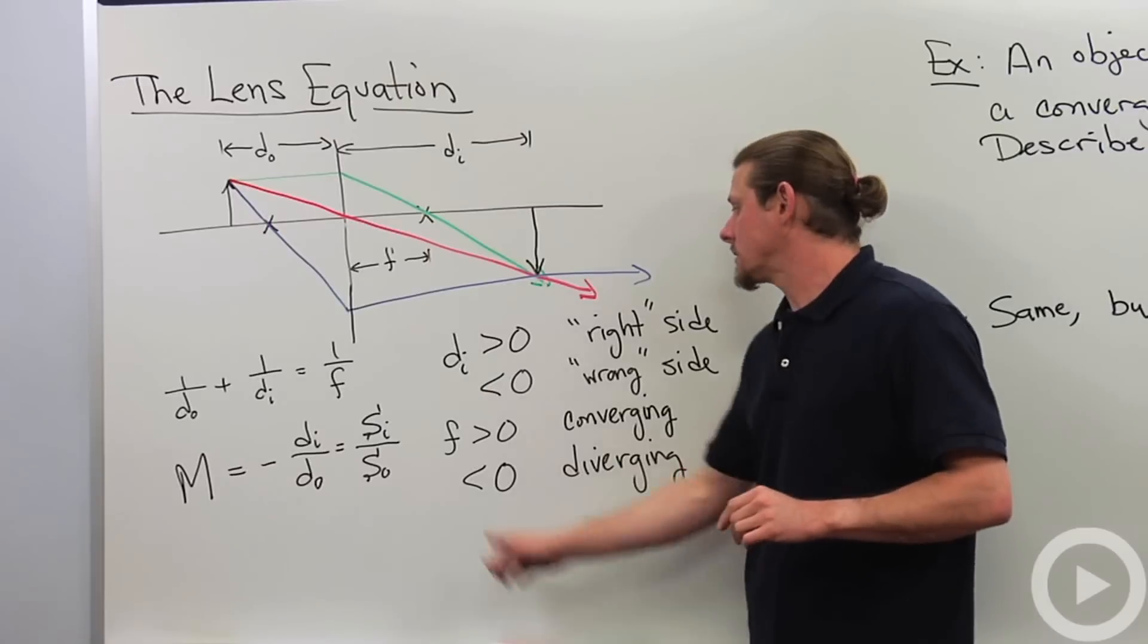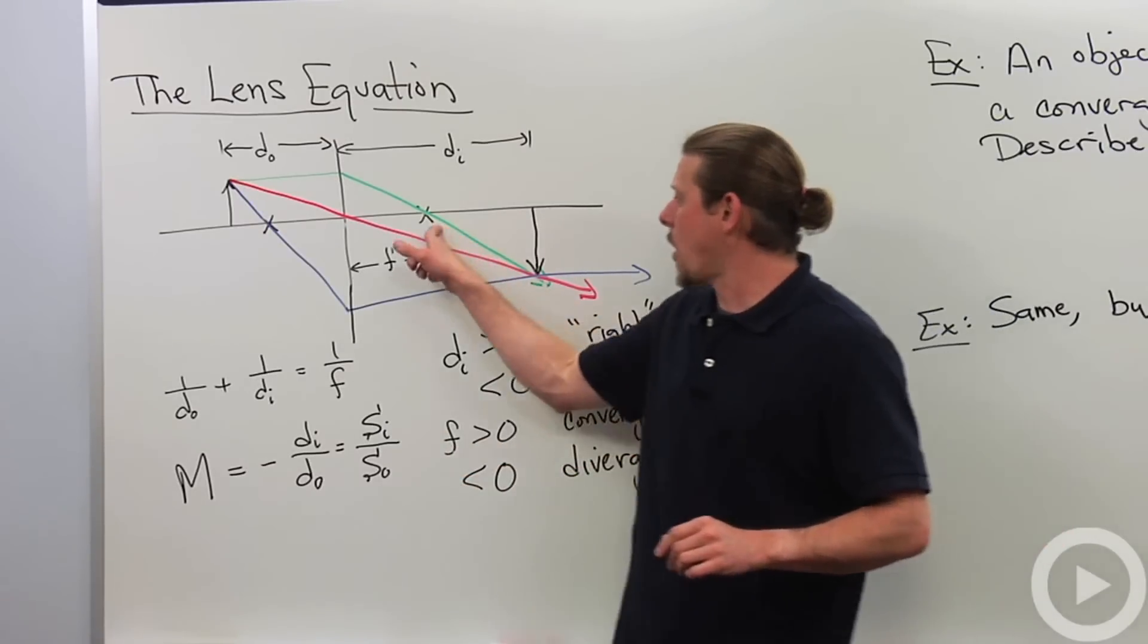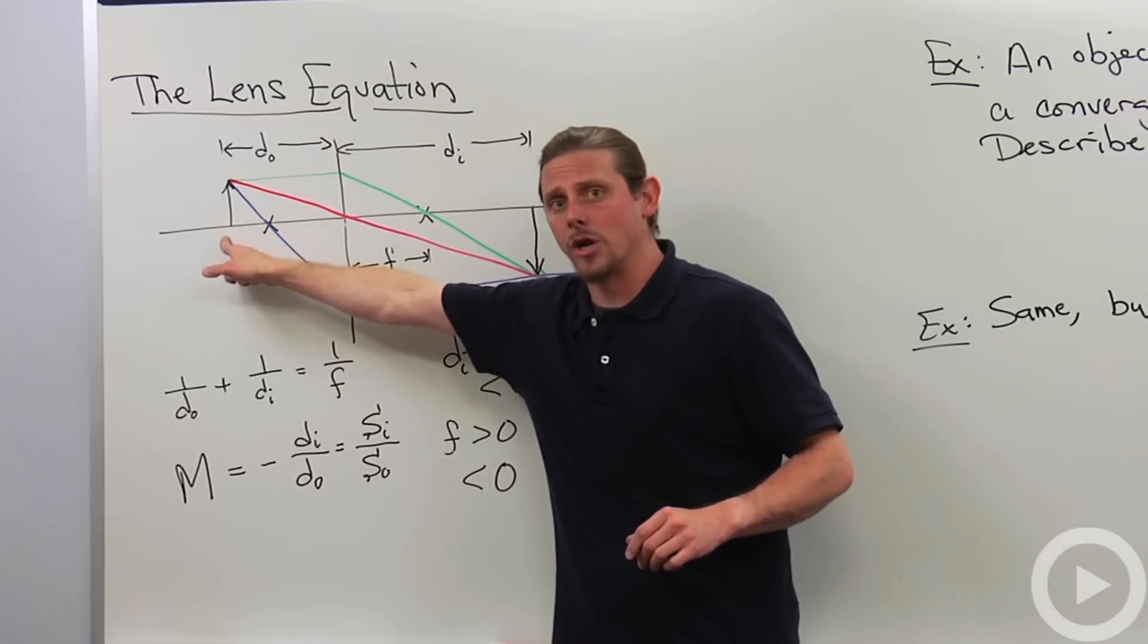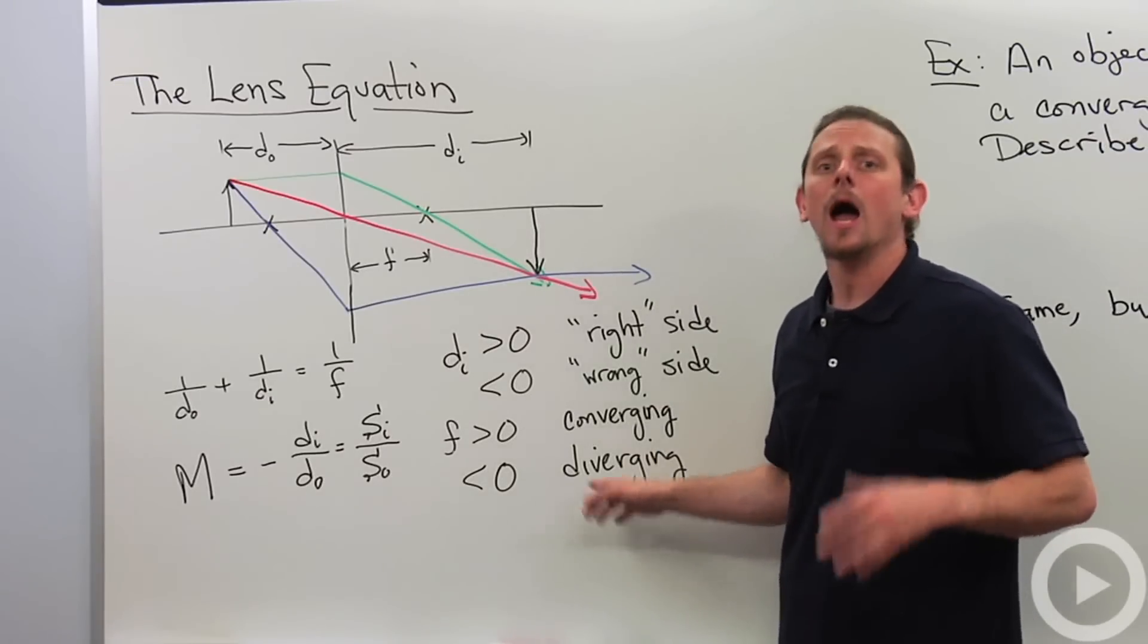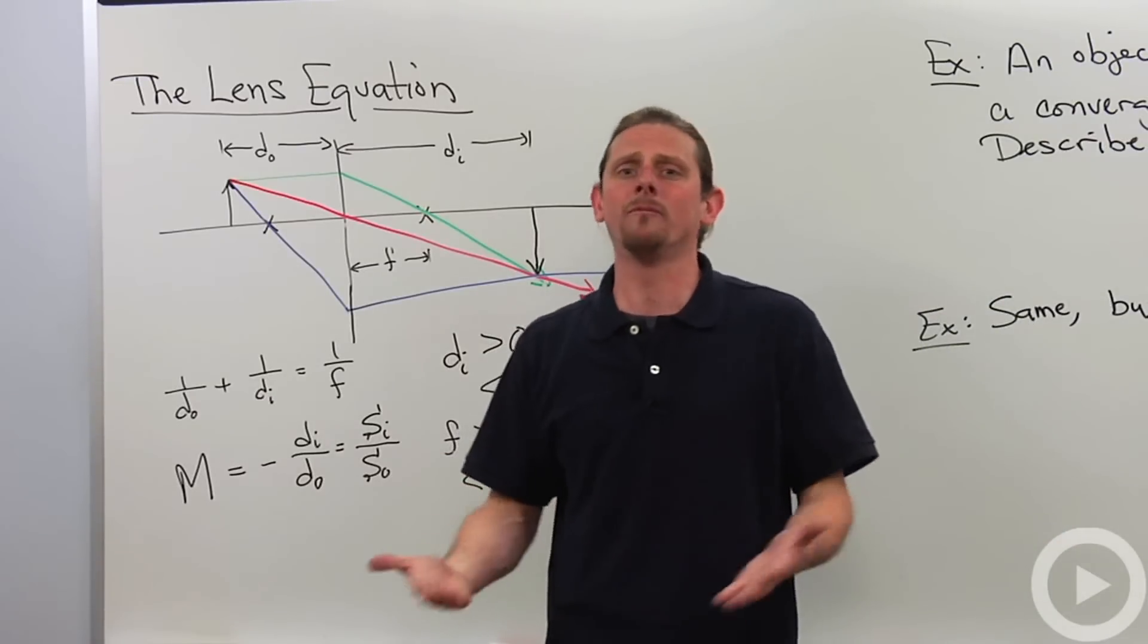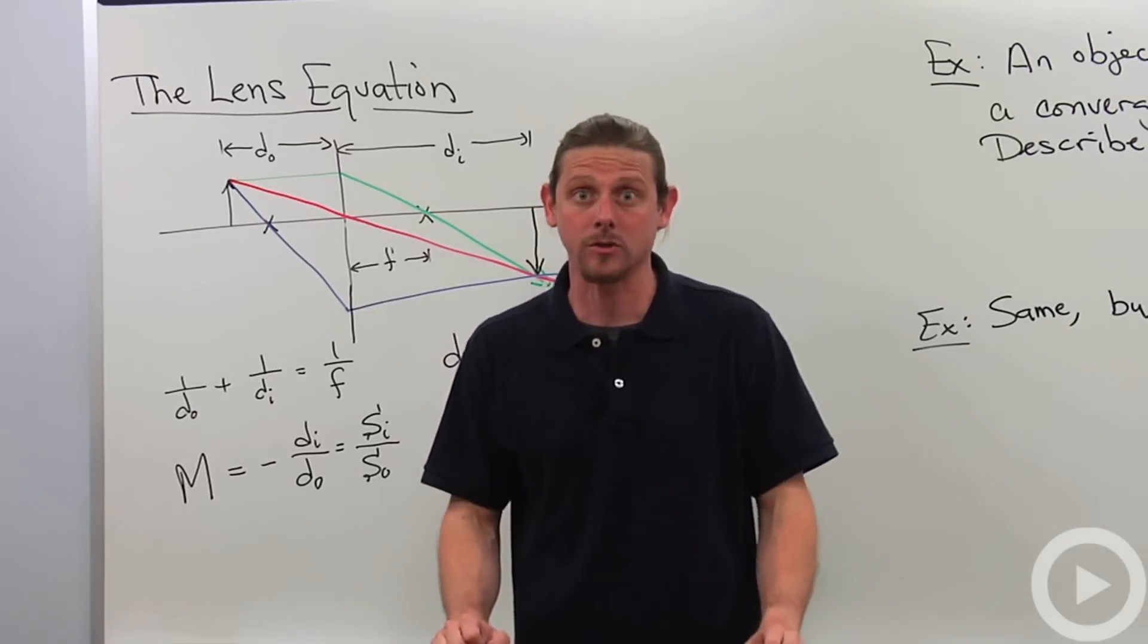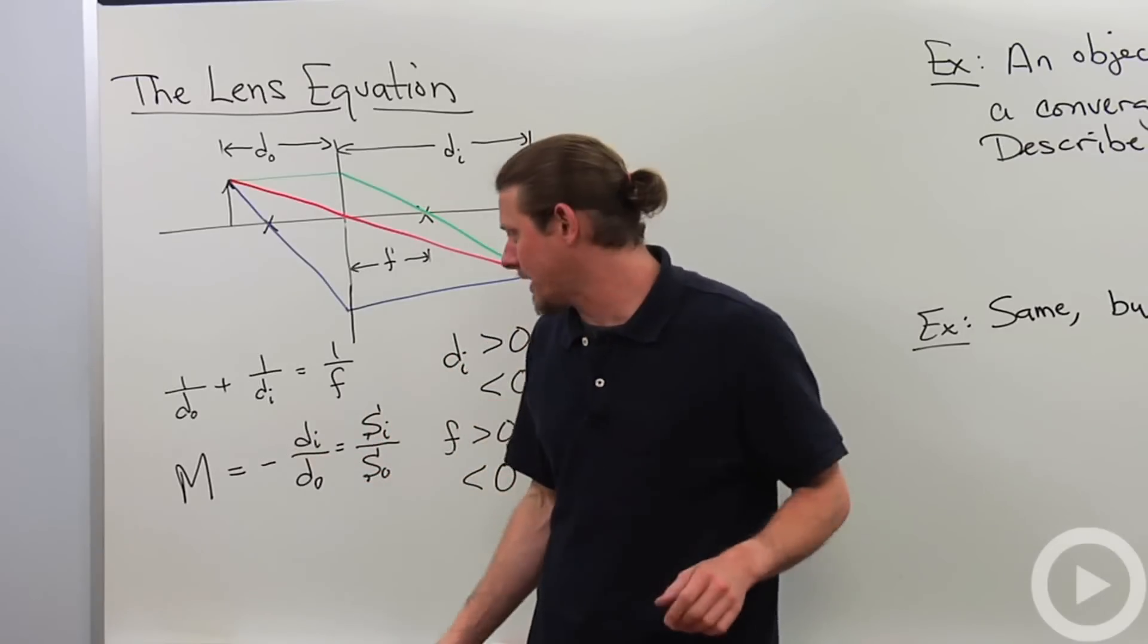Same thing with the focus. Focus is positive when it's a converging lens, and that means that the focus is on the opposite side of the lens than the object. It's negative when it's a diverging lens, and that means that light doesn't actually come from the focus or go through that focus, it only kind of pretends as if it came from the focus. So that's the way that we need to interpret it, and those are the only tricky things.